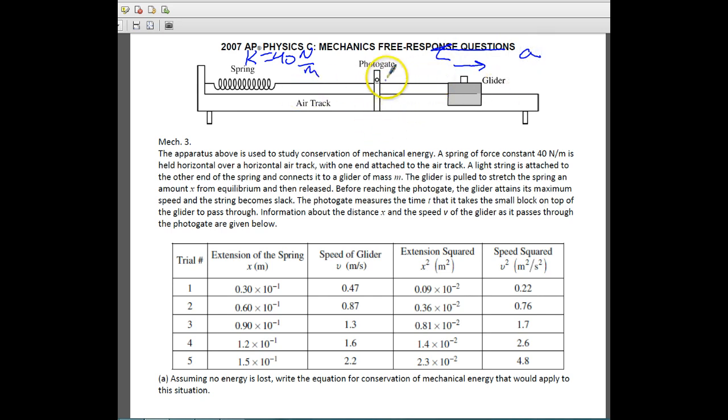The spring then accelerates this block and the glider in this direction. And then right at a point just before the photogate, the maximum speed is attained. And then it just travels across until it hits the spring. So at this point you would also have a maximum kinetic energy. And over here when you pull it back to stretch it, you have potential energy due to the spring.